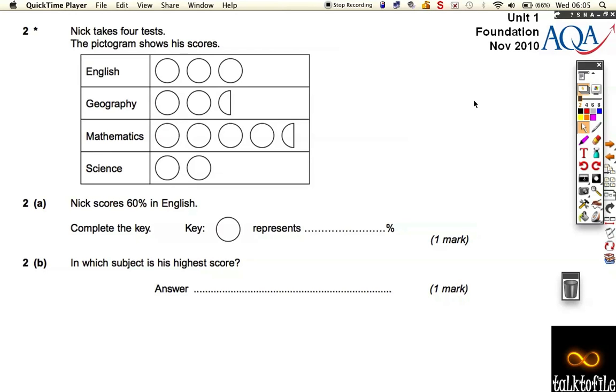We have a pictogram question from the November 2010 paper, question 2. Notice this little star, which means somewhere in the question they're going to ask you to write something down and you're going to earn marks with the way you explain yourself using words. Don't get freaked out by that.